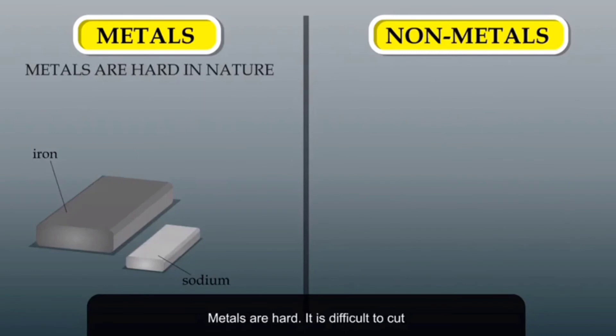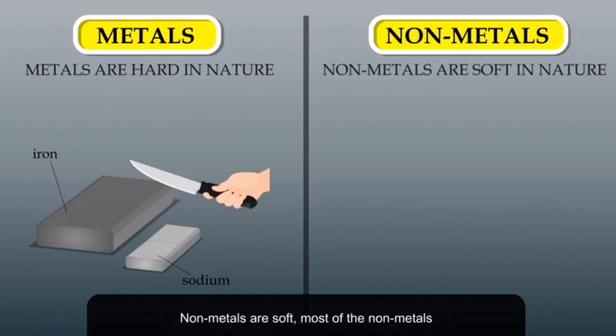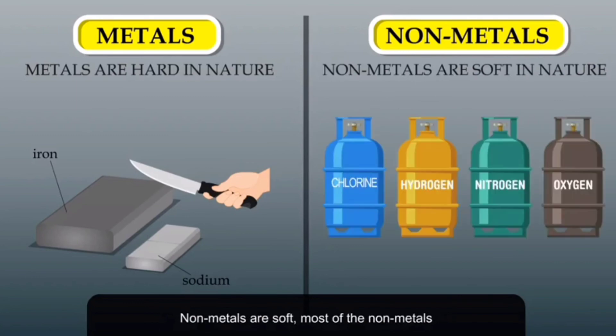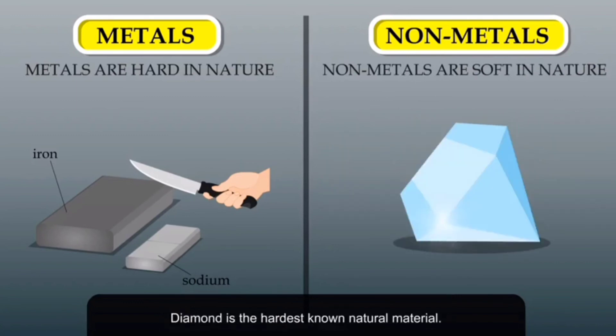Metals are hard. It is difficult to cut them into pieces, except for sodium and potassium, which are soft and can be cut with a knife. Non-metals are soft. Most non-metals are in gaseous state. Diamond is an exception; it is an allotrope of carbon and yet is the hardest known natural substance.